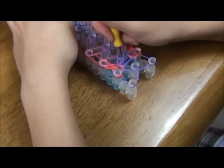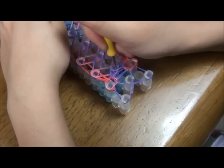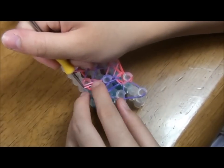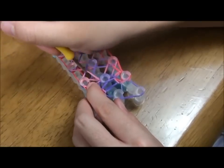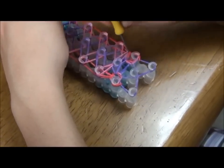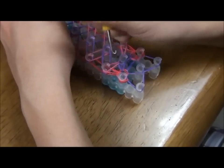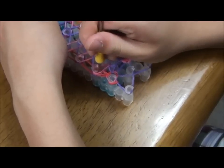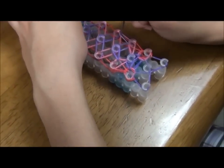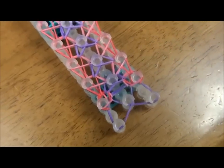Then hook the pink rubber band going outwards like this and hook the other side as well. Then hook the purple rubber bands like that. Keep doing this until the end. This is what it should look like when it's done.